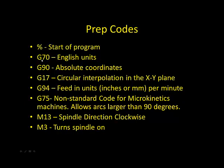G70 tells the controller, or the machine tool, that you want to use English units. G90, as you already know, represents absolute coordinates. G17, again, tells the controller that you're going to do your circles or your arcs in the XY plane only. G94 indicates that the feed units you want to use, either inches or millimeters, are in a per minute basis. G75 is a non-standard code for the microkinetics machines only. This allows arcs larger than 90 degrees. M13 indicates that you want to rotate the spindle in the clockwise direction. And M3 turns on the spindle. For the prep codes specific to the machine tool you'll be using, please reference your laboratory manual. Thank you.